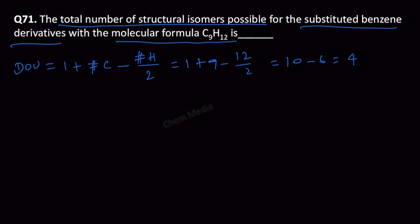Since they said substituted benzene derivatives, let us write the benzene derivatives. Benzene has a ring and 3 double bonds, so together it accounts for 4.